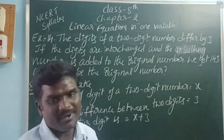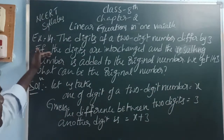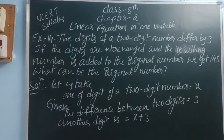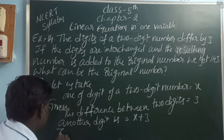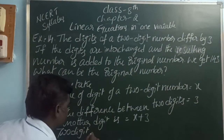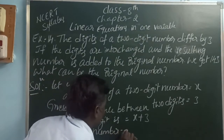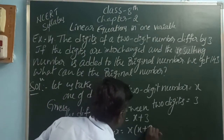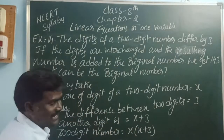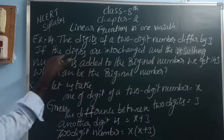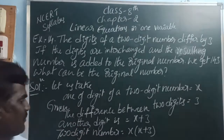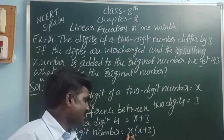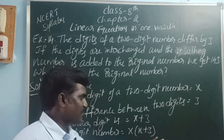The difference between x and x plus 3 is 3. If the digits are interchanged, that means the place values of the digits change. So x plus 3 is in the units place and x is in the tens place after interchange.